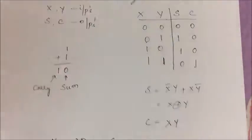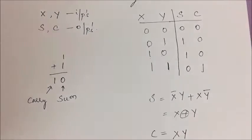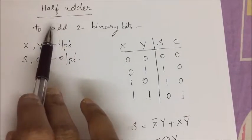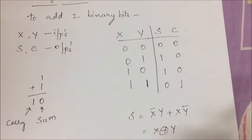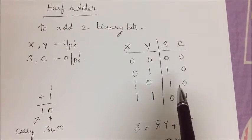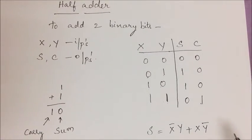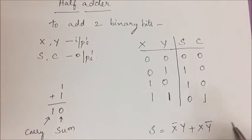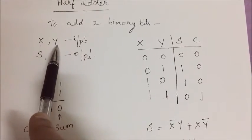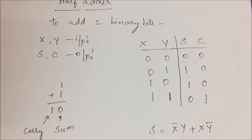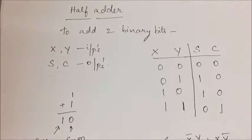When you come to the design of combinational circuit, the first step is the problem statement - that is half adder which is used to add 2 binary bits. Then we determine how many inputs we are going to have and how many outputs we will have. Here 2 inputs which we are representing as x and y, and 2 outputs which we are representing as s and c. s represents sum and c represents carry.